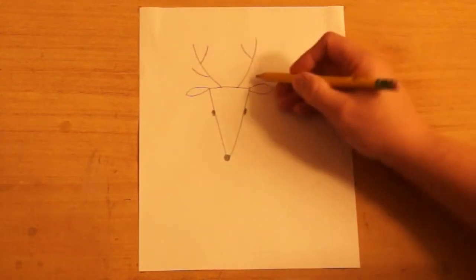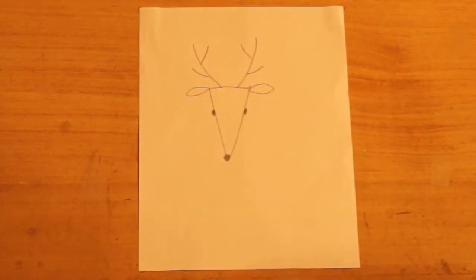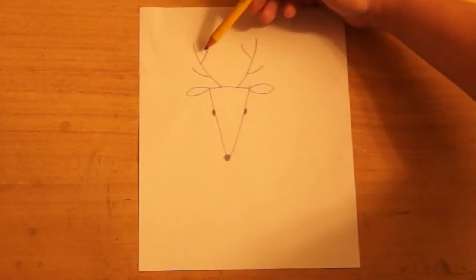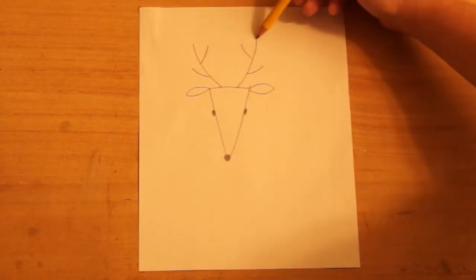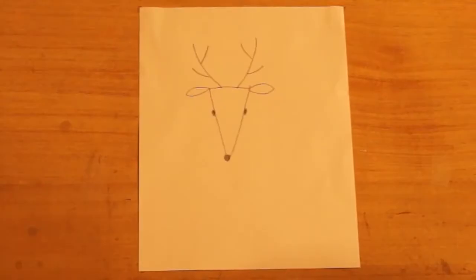Now, hunters will tell you how many points they have, and that's the ends of the antlers here. So this would have one, two, three, four, five, six. So this deer is a six-pointer.